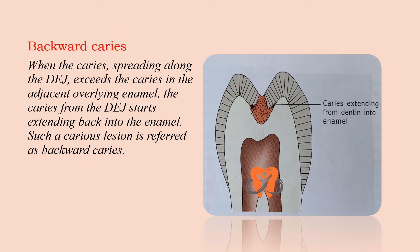Backward caries occurs when the caries spreading along the dentinoenamel junction (DEJ) exceeds the caries in the adjacent overlying enamel, and the caries from the DEJ starts extending back into the enamel. When the spread along the DEJ becomes greater than the caries in the enamel above it, caries starts moving back into the enamel — this is known as backward caries.